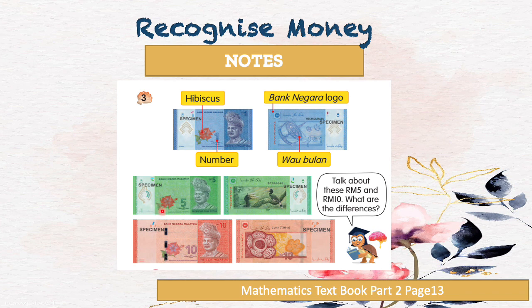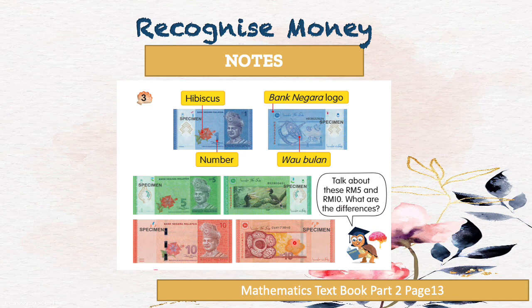At the back of the five ringgit note, the picture is the kenyalang. Now look at the ten ringgit note — it is red in color. We can see the hibiscus, the number 10, and the first Agong of Malaysia on the front surface. At the back of the ten ringgit note, we can see a flower — its name is Rafflesia. Rafflesia is the biggest flower in the world.